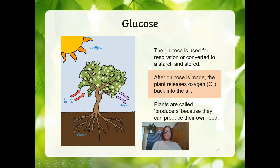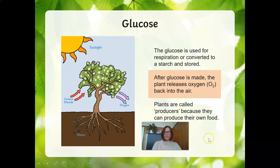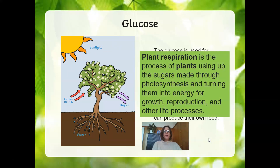Plants are called producers because they are able to produce their own food. Animals are not able to go through this process and cannot produce their own food. Plants are called autotrophs — able to produce their own food — and animals are called heterotrophs, relying on other organisms for food. Plant respiration is the process of plants using up the sugars made through photosynthesis and turning them into energy for growth, reproduction, and other life processes. We are able to have life because of plant respiration, giving us the essential food and sugars we need.